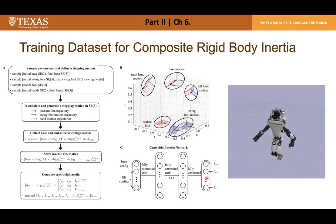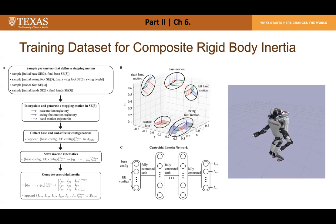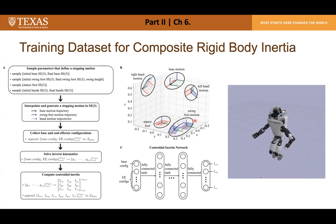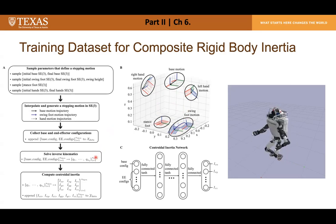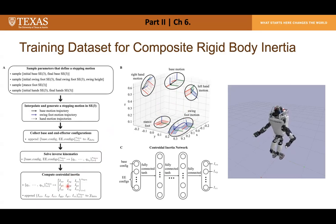To generate training data, I sampled stepping-like motions parameterized by initial and final torso configuration, including foot swinging factors. For each frame of motion, I solved inverse kinematics considering joint limits and nominal robot positions to compute joint configurations, then computed the composite inertia from those configurations. This data becomes the training set where the input is base and end-effector configuration and the output is the composite inertia.